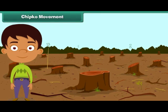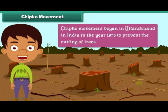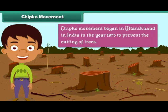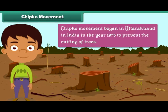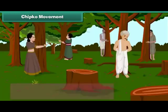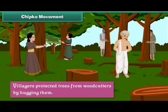Chipko Movement. The Chipko Movement began in Uttarakhand, India, in the year 1973 to prevent the cutting of trees. It was called the Chipko Movement because during the movement, villagers protected trees from woodcutters by hugging them.